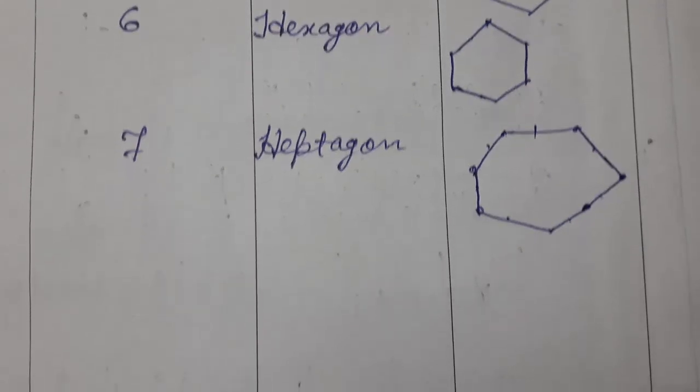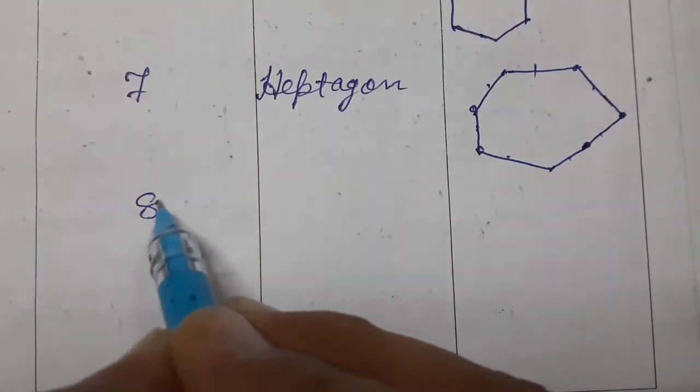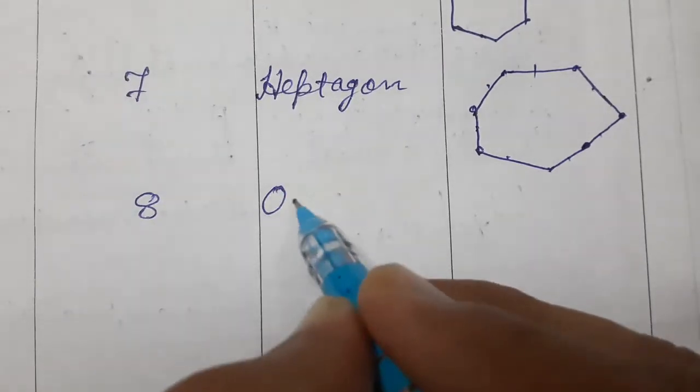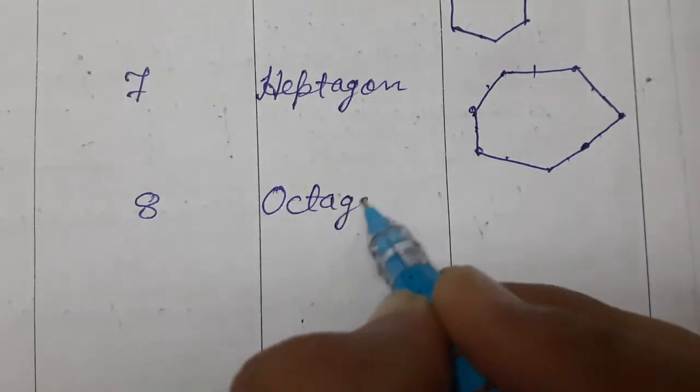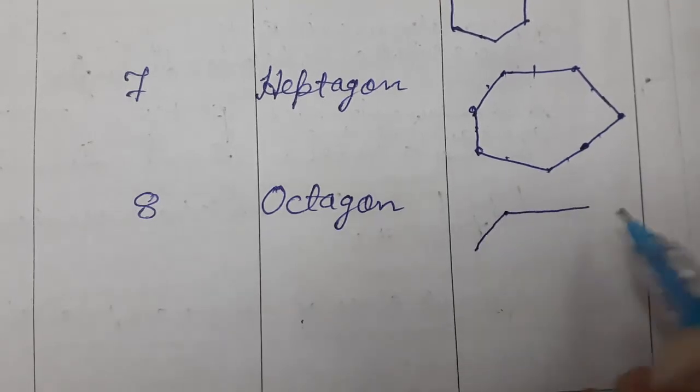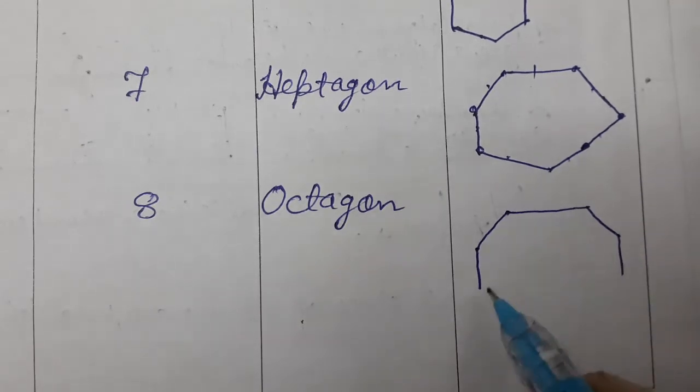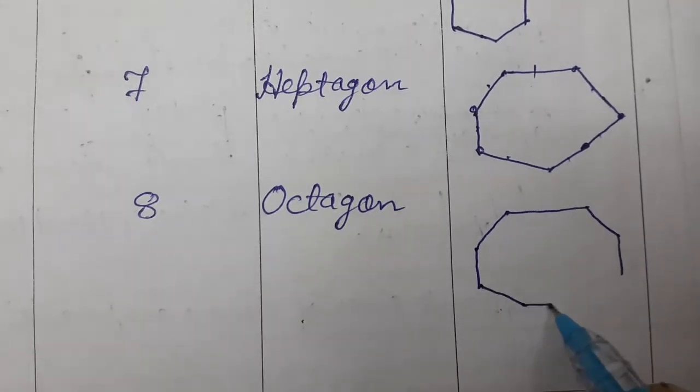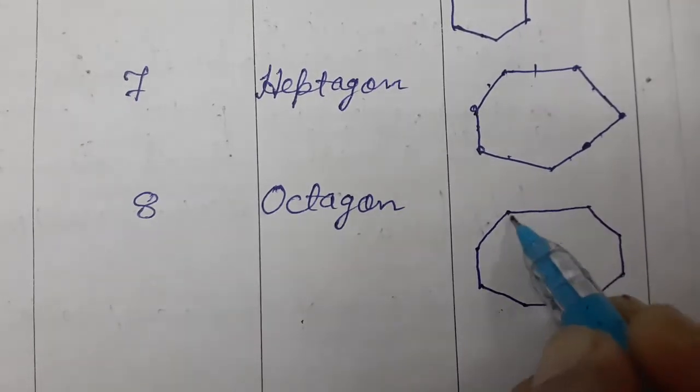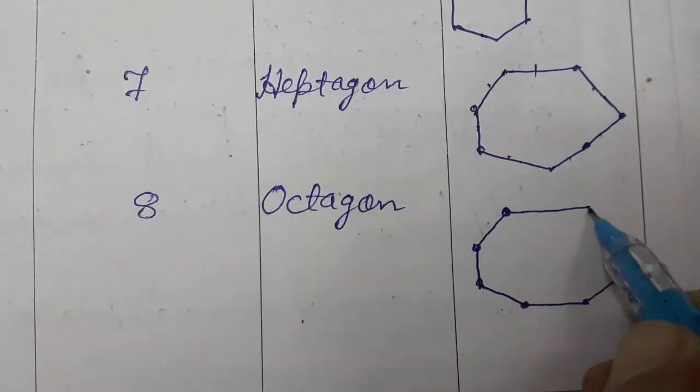Now one more. Eight sides. If it contains 8 sides, then it is called octagon. 1, 2, 3, 4, 5, 6, 7, 8. So how many sides are there? Eight sides. So it is called octagon.